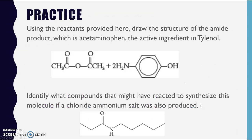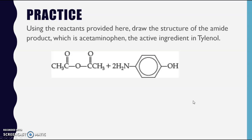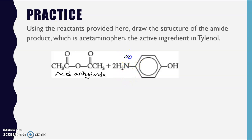Let's look at some practice problems - pause the video and attempt them on your own. For the first one, using the reactants provided, draw the structure of the amide product, which happens to be acetaminophen, the active ingredient in Tylenol. I recognize one reactant as an acid anhydride, and the other, even though it's a complex structure, is a primary amine.